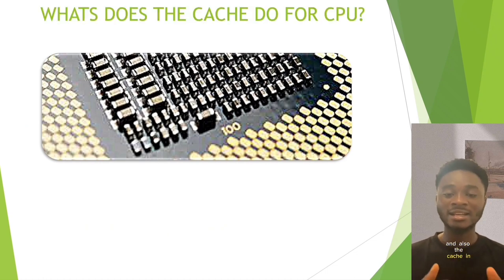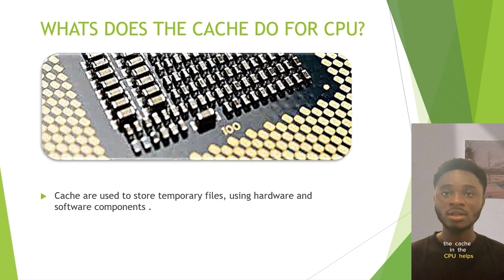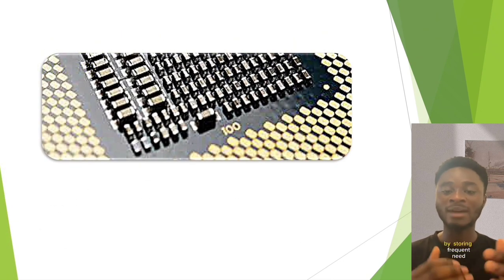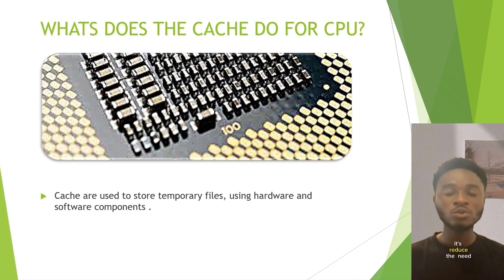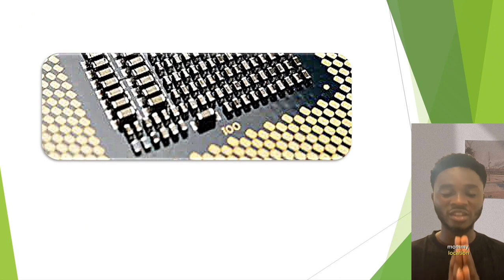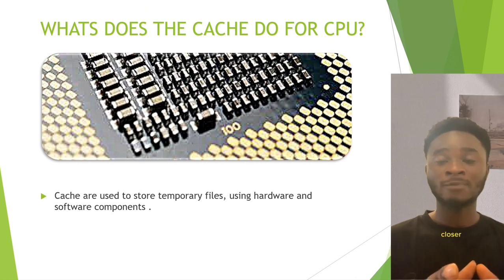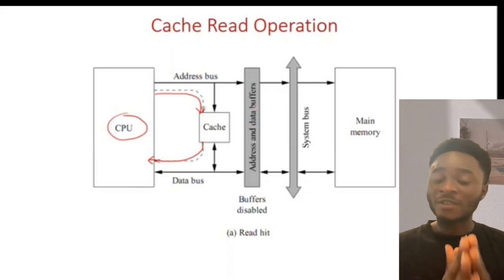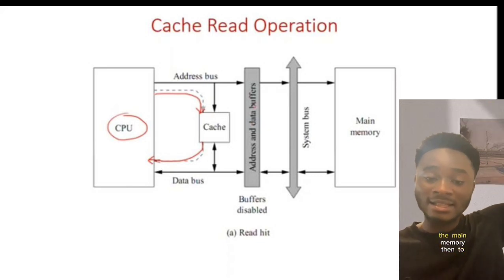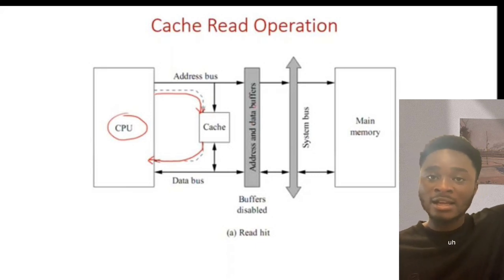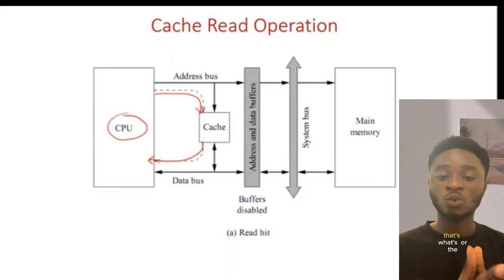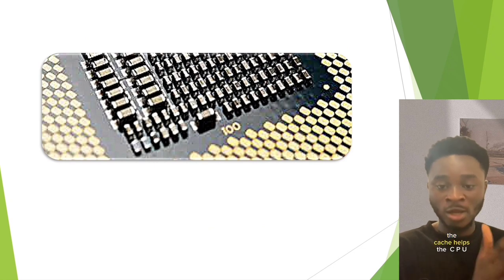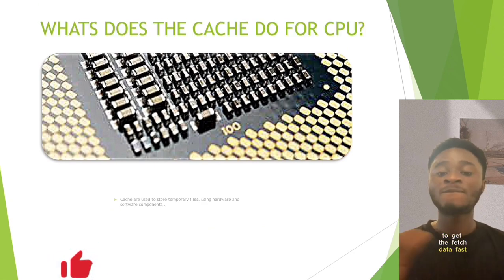It reduces the need to fetch from slower main memory locations. As shown in the diagram, the CPU and cache are very close together, making it fast for the CPU to retrieve data from the cache. The cache helps the CPU fetch data quickly without any slowdown.